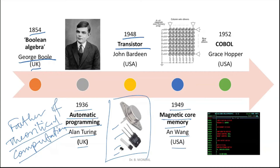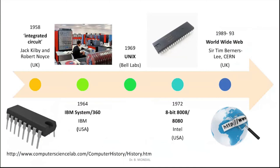In 1949, magnetic core memory was invented by An Wang in the USA — a kind of magnetic mesh that was able to capture information. Then in 1952, the first programming language came — COBOL — in the USA. This was a transformative time; the first programming language came even though a good operating system was not yet available.